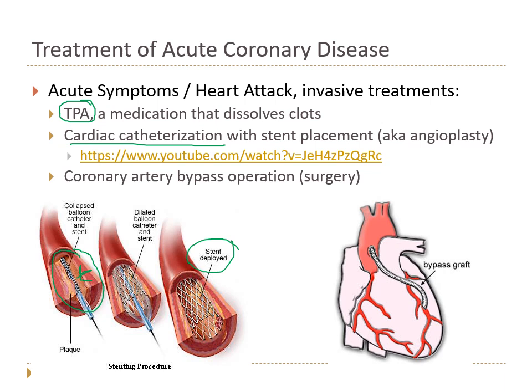Sometimes a stent won't work or will work only temporarily, so we perform a coronary artery bypass graft. We take a blood vessel from somewhere else in the body and create a detour — a new pathway past the blockage. The blood vessel most commonly used is the great saphenous vein, the long superficial vein running from the inside of the ankle up to the thigh. Sections of that vein are used with one end connected to the aorta and the other end beyond the blockage, restoring blood flow to the heart muscle.